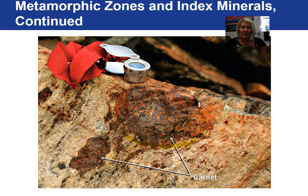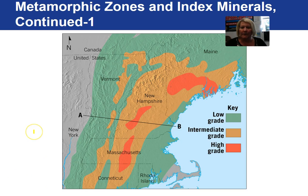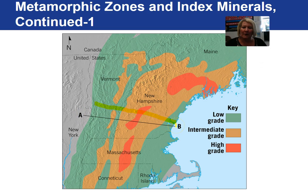The index mineral garnet indicates an intermediate to high grade metamorphic rock. This shows an area of the northeast mapped from low grade, through intermediate and high grade, back to intermediate and low grade — across the zone from New York all the way through New Hampshire. Based on index minerals, it was determined where the low, intermediate, and high grade metamorphism occurred.